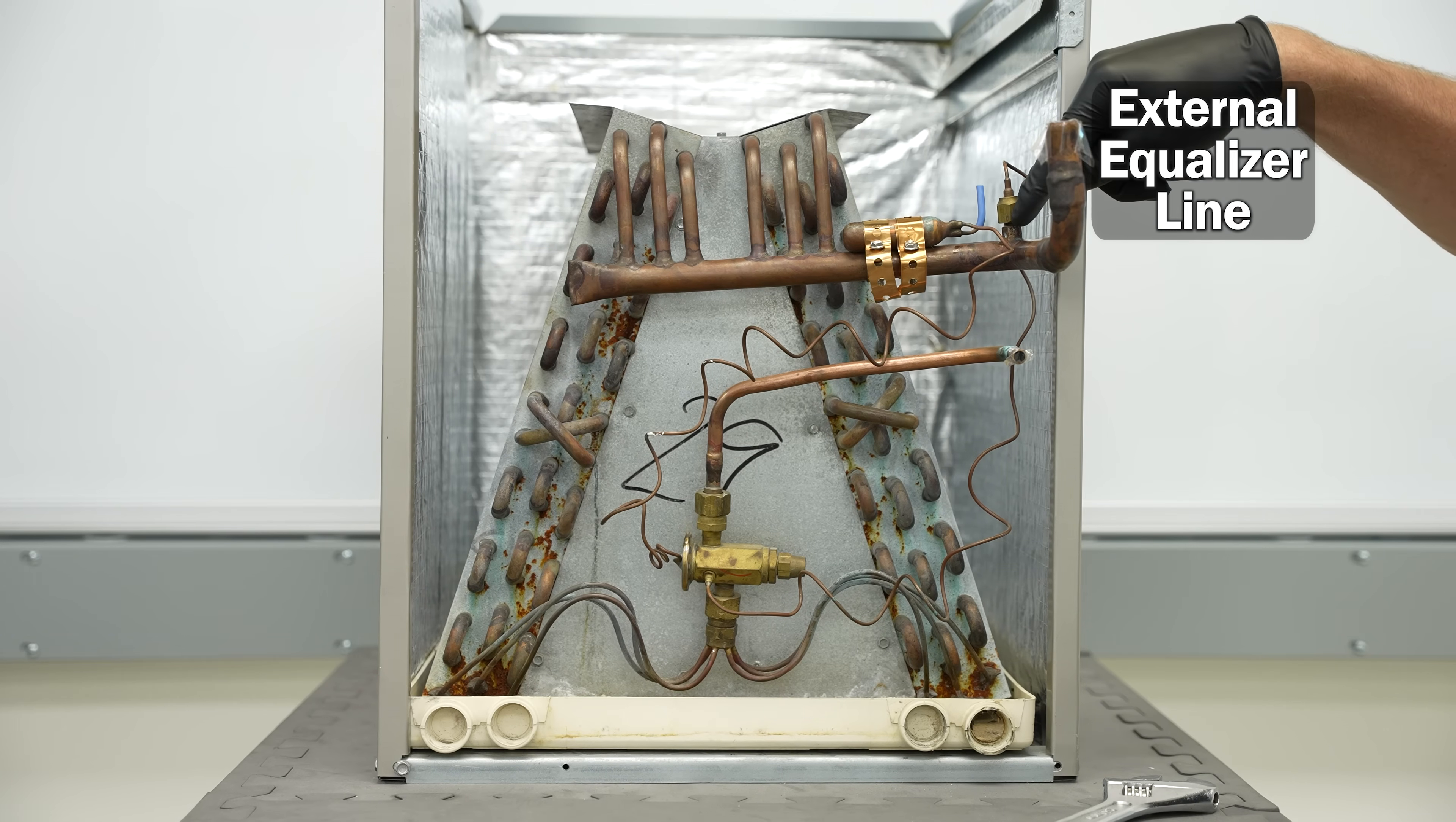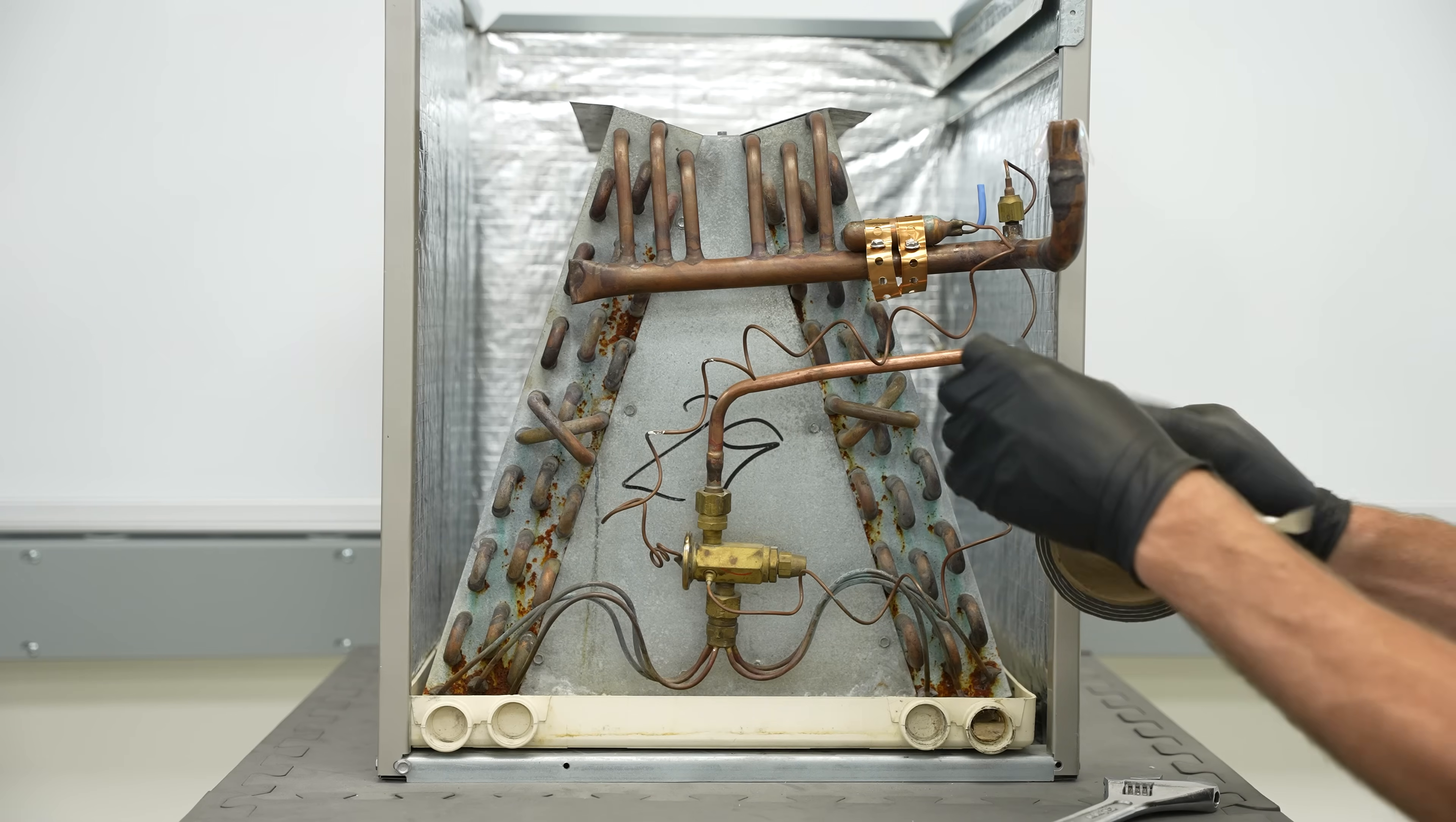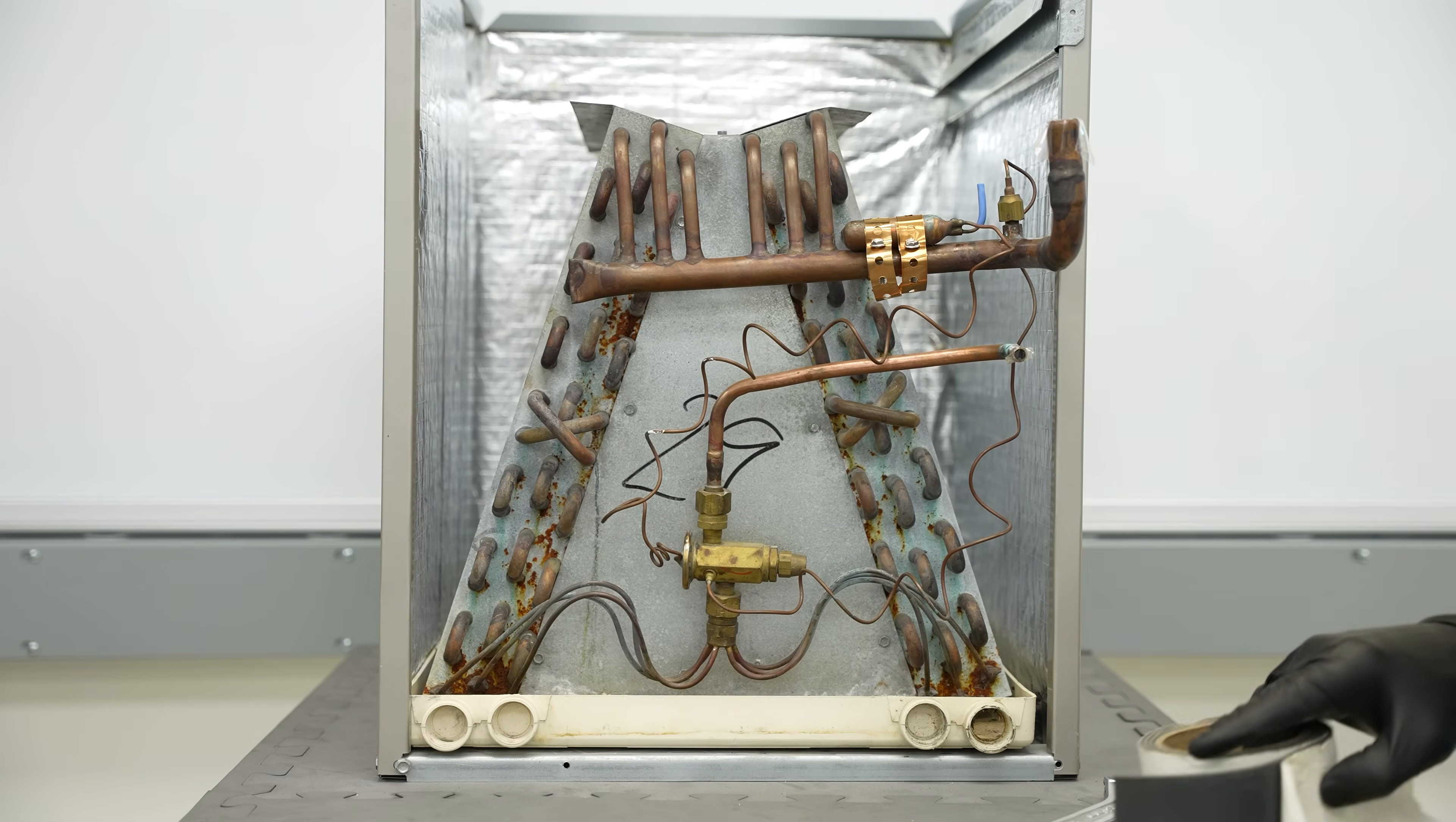I like to have that external equalizer downstream from the bulb, but some manufacturers actually have it before. It just depends. But if you're installing it in the field, you should definitely put the external equalizer downstream of the bulb. After you install the bulb, you're going to want to put insulation around that just to make sure that you're truly sensing the temperature on that vapor line. You can put that tape on and put zip ties on, or you could also use cork tape instead.